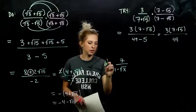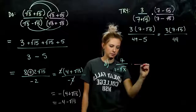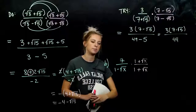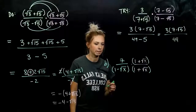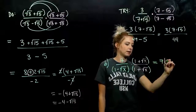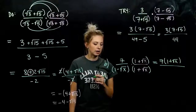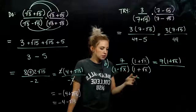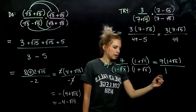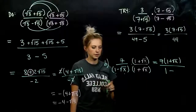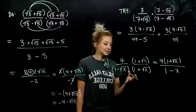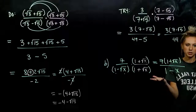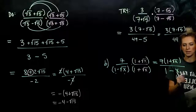For part B, the conjugate of the denominator is the same thing with an opposite sign. Whatever I do to the bottom, I have to do to the top. Keep 7 factored out in the numerator. In the denominator: 1 squared minus root x times root x gives 1 minus x — now it's rational. Can we cancel anything? No, but we should always check for common factors. It's simplified as far as we can go.